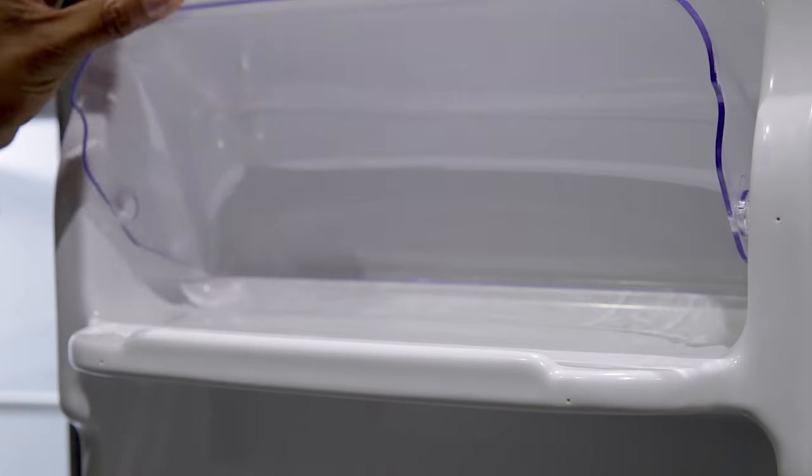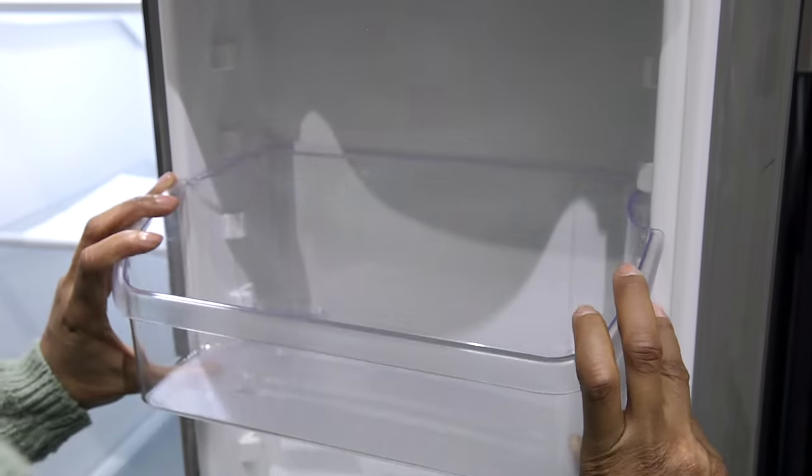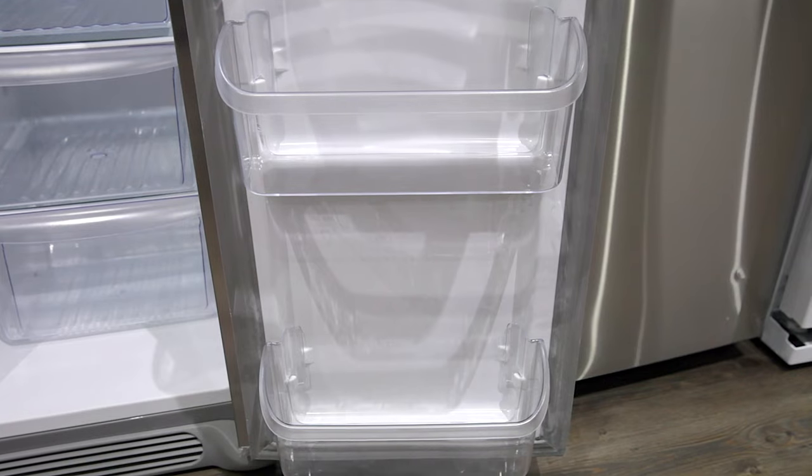On the door is the dairy compartment and four bins. Two are adjustable and deep enough for gallon storage, two are stationary. All door bins are removable for cleaning.